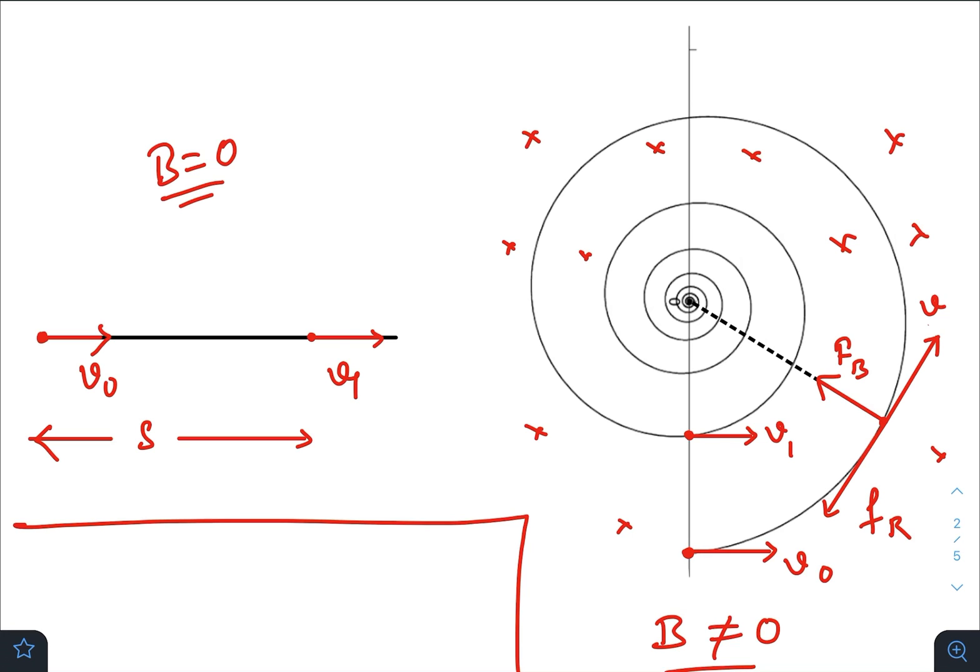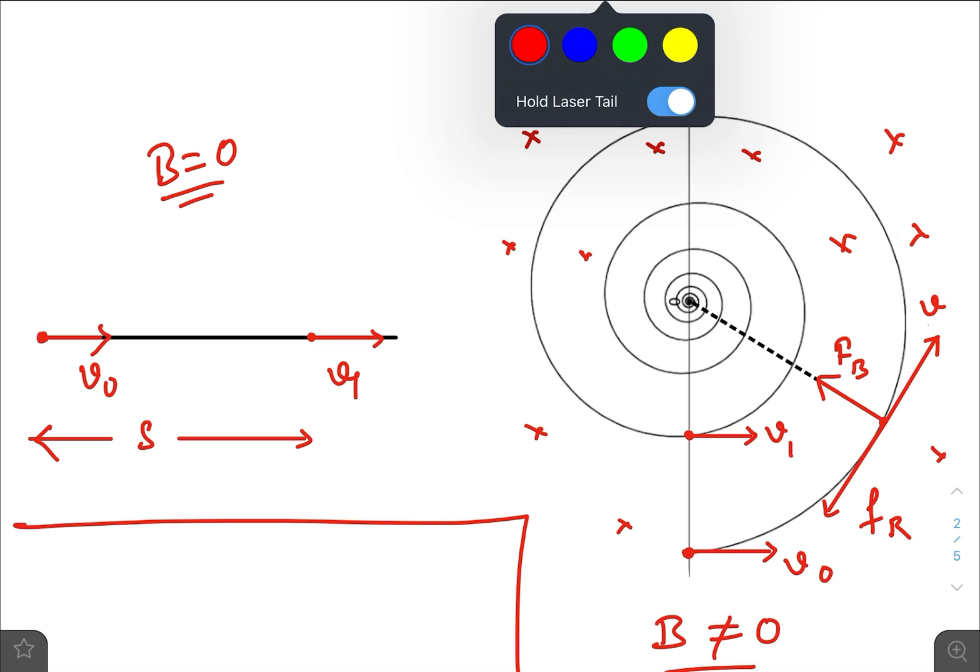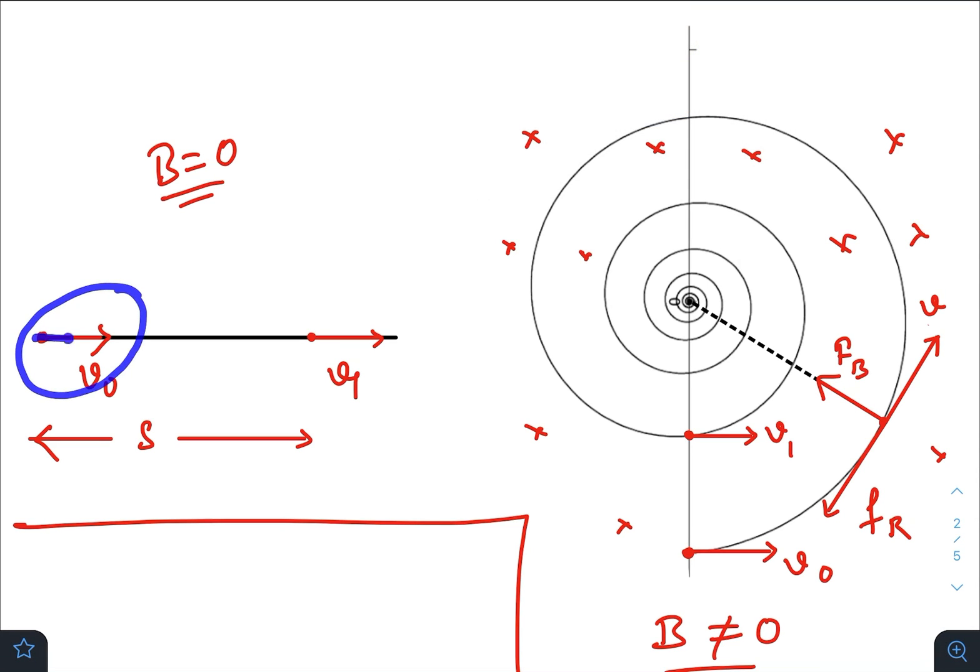As I have discussed earlier, when there is no magnetic field and only the resistive medium is present, if you throw a particle with a speed v0, the resistive medium decreases its speed. Suppose at some instant of time the speed becomes v1 and at that time the distance travelled by the particle is S.